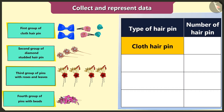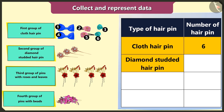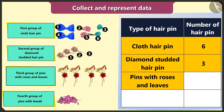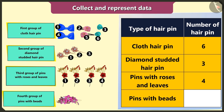The number of cloth hairpins is six. The number of diamond studded hairpins is three. The number of hairpins with roses and leaves is four. And the hairpin with beads is one.